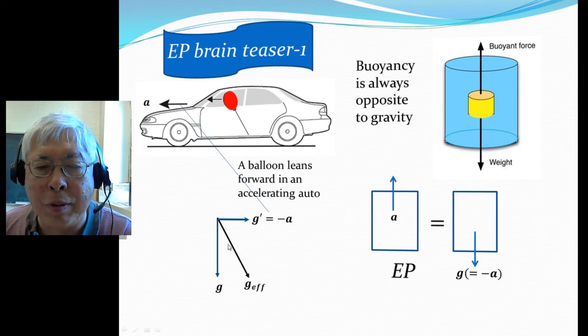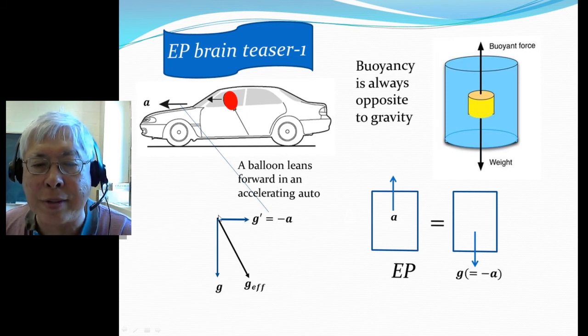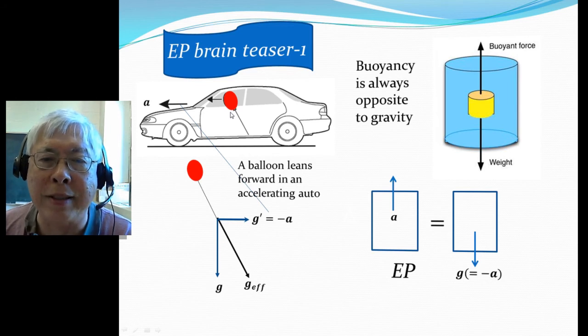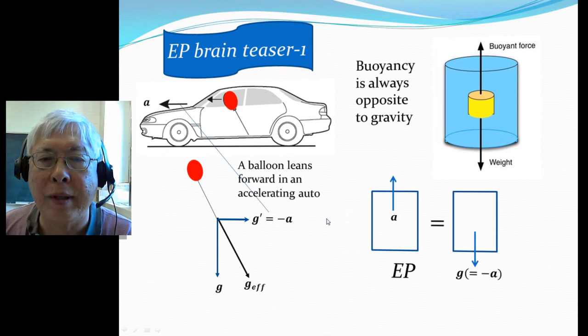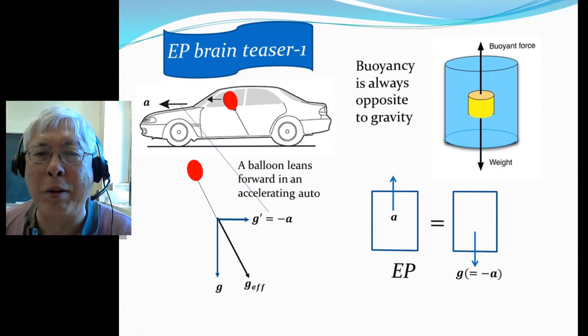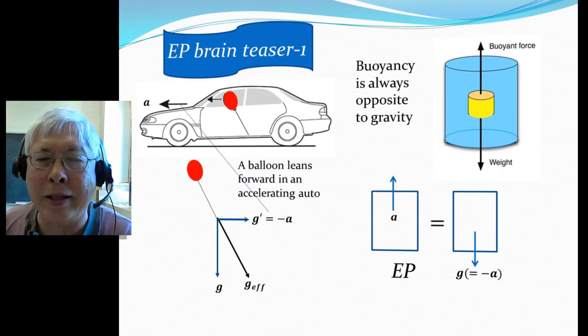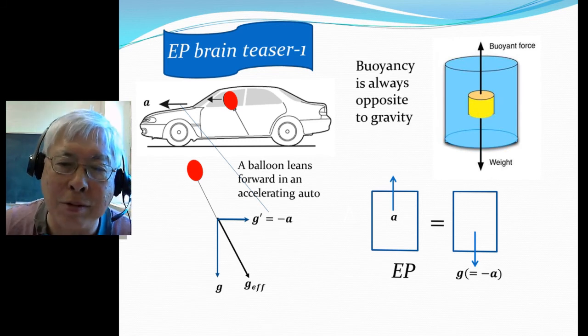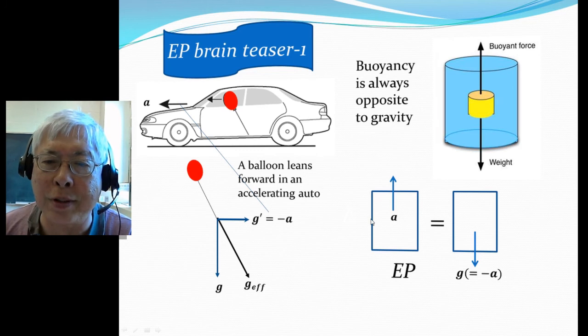The sum of these two components gives you an effective gravitational force which is slanted, so therefore buoyancy is opposite to that, so the balloon will lean forward. And of course when you decelerate it's exactly the opposite. I think it's fun - you should get a balloon, put it in a car, tie it down and roll up the windows. You need to roll up the windows because the whole pocket of air in the car allows you to provide the buoyancy. If you leave the window open, there are all kinds of other factors and it would not work.